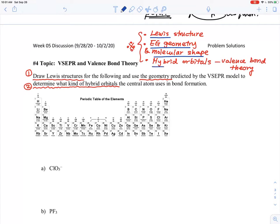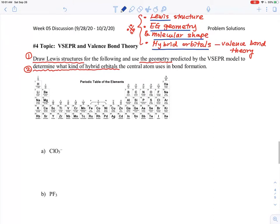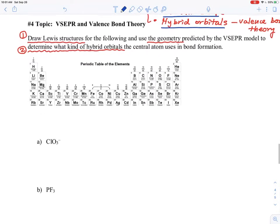Finally, we're talking about what kind of hybrid orbitals are going to form, based on valence bond theory. This problem is asking about this. Let's solve this problem one by one.